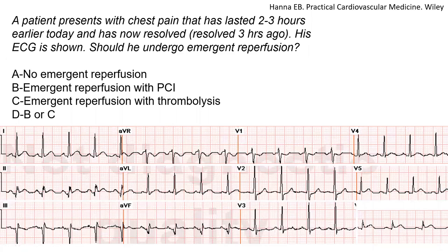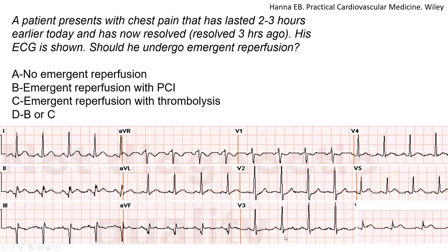Another case: a patient presents with chest pain that lasted two to three hours earlier today, now resolved, and we're three hours from his chest pain. His EKG is shown — should he undergo emergent reperfusion? At first glance the EKG looks unremarkable, but there are subtle findings. There is ST depression in V1 through V3 — isolated ST depression in V1 through V3 — which in this patient coming with chest pain would worry me. It's mild, half a millimeter, which is already significant in the right context.